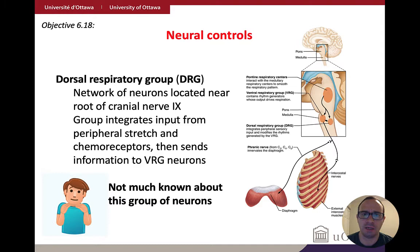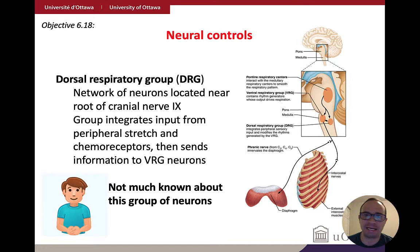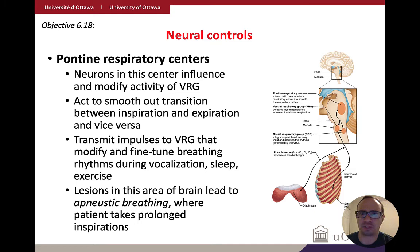You also have the dorsal respiratory group — a network of neurons located very close to the ventral respiratory group. It integrates input from stretch receptors around the body, such as in the diaphragm and external intercostal muscles, and sends information along to the ventral respiratory group. Honestly, we don't know too much about this group of neurons — we know it exists and plays some role in regulating the ventral respiratory group, but there are more open questions than answers here.